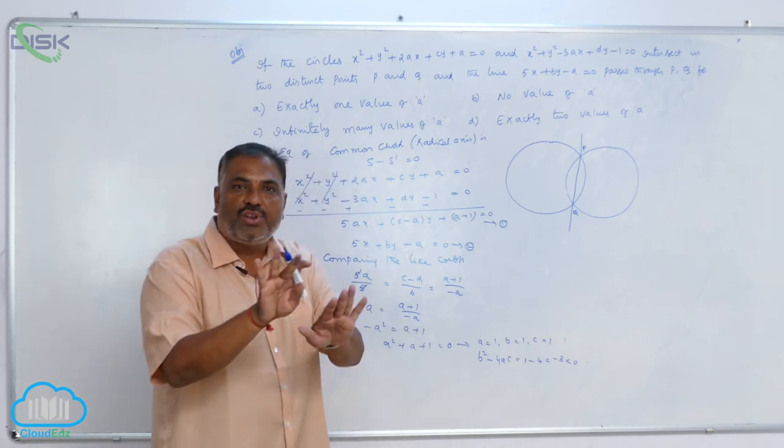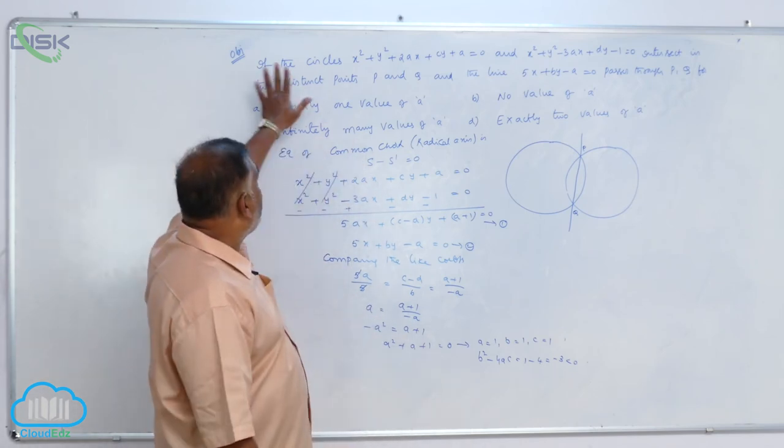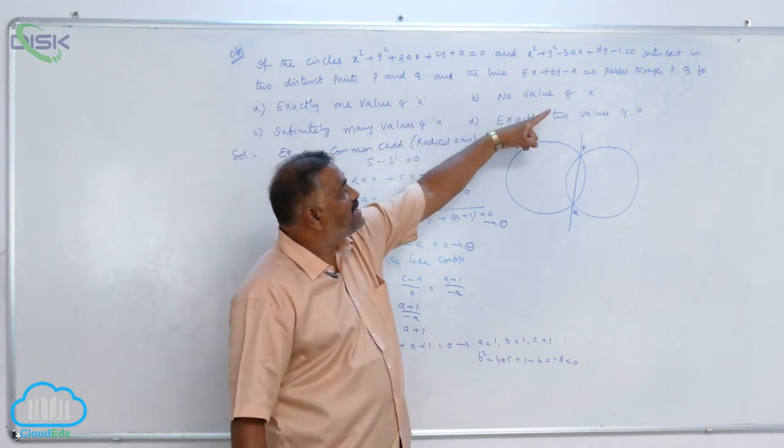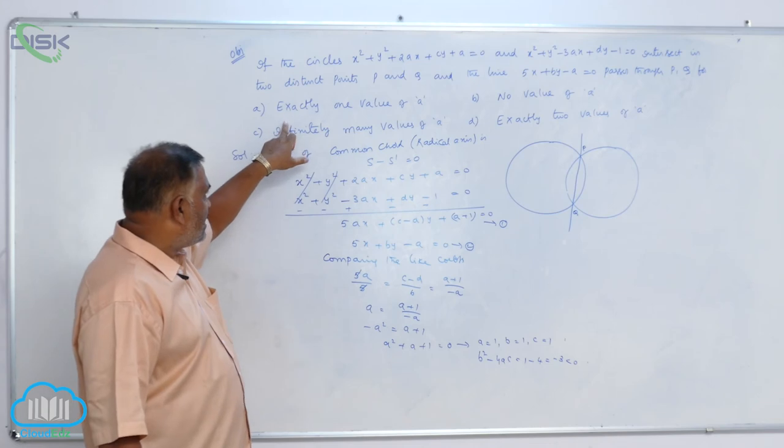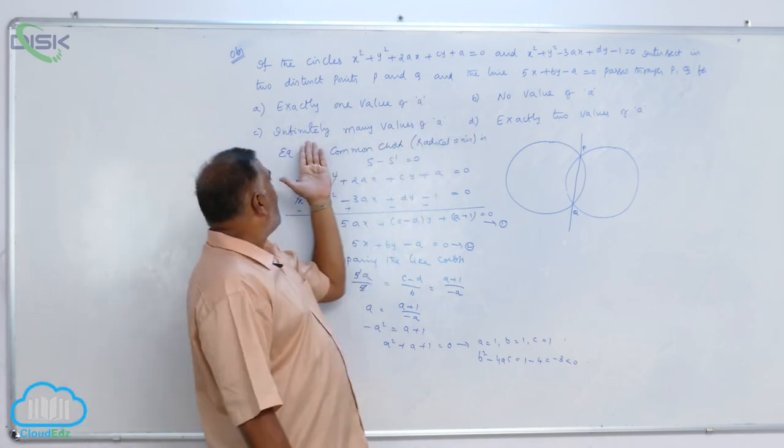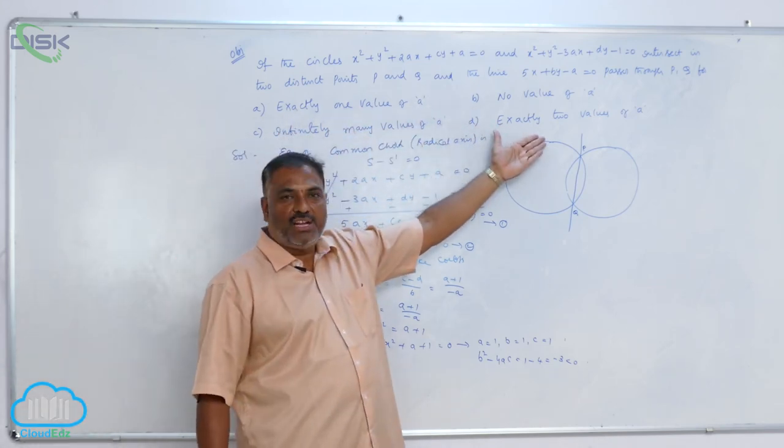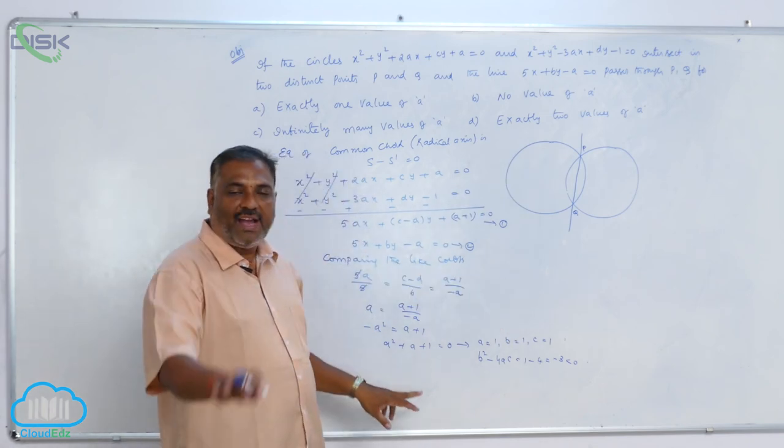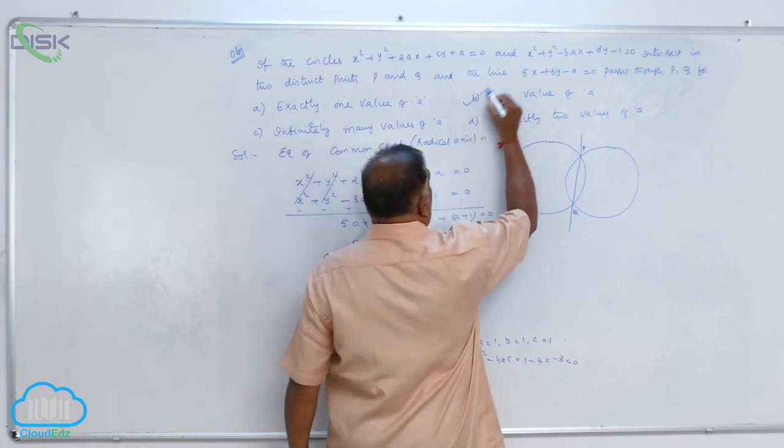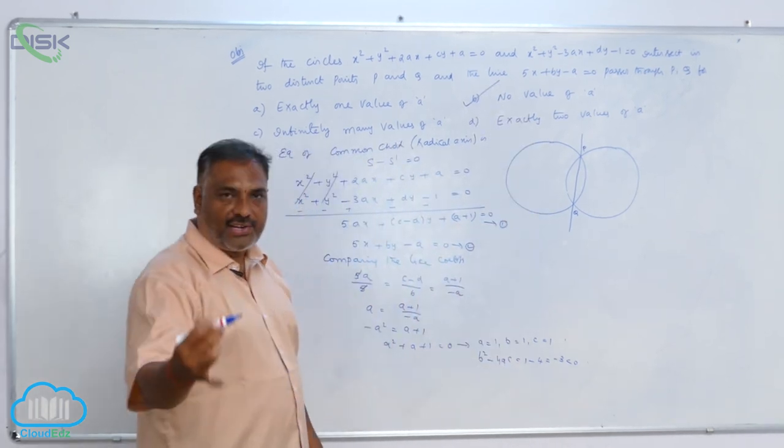He is asking: it is passing through for how many real values of a? Is it exactly one value, no value, many values, or exactly two values? Since the equation containing a has no real values, the option B, no value of a, is correct.